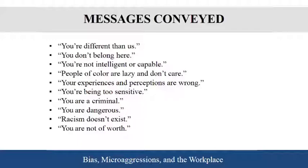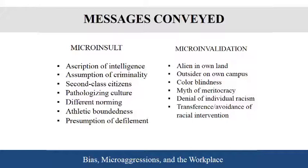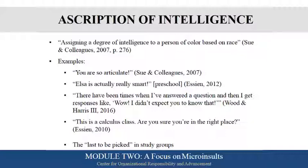Microaggressions generally fall into two categories: insulting someone or invalidating their experience. With microaggressions, it's not just about what is said or not said — it's about the meanings taken away. The most common example when talking about students is around intelligence, where we assign a degree of intelligence based upon them being people of color. You say 'wow, you're so articulate' without realizing you're saying it from a sense of surprise. Sometimes I like to say back, 'wow, so are you,' because then it has them think, 'why did I say that?'